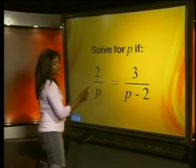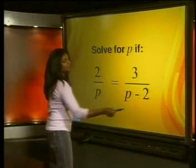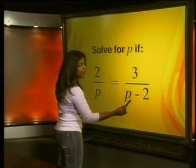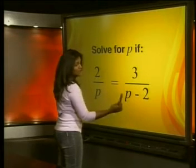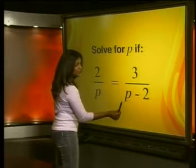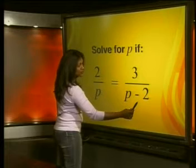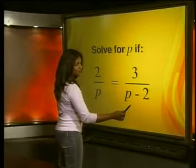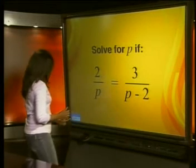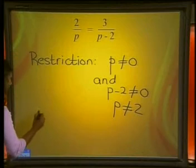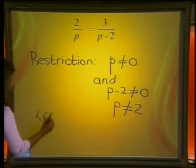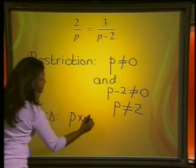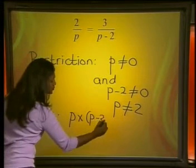Now we know the values of p that are not allowed. Here we have two denominators: p and p minus 2. Remember that p minus 2 is regarded as one whole number, simply because we're taking the value of p and subtracting 2 from it. p minus 2 cannot be further factorized. So we can write the LCD as p multiplied by p minus 2.